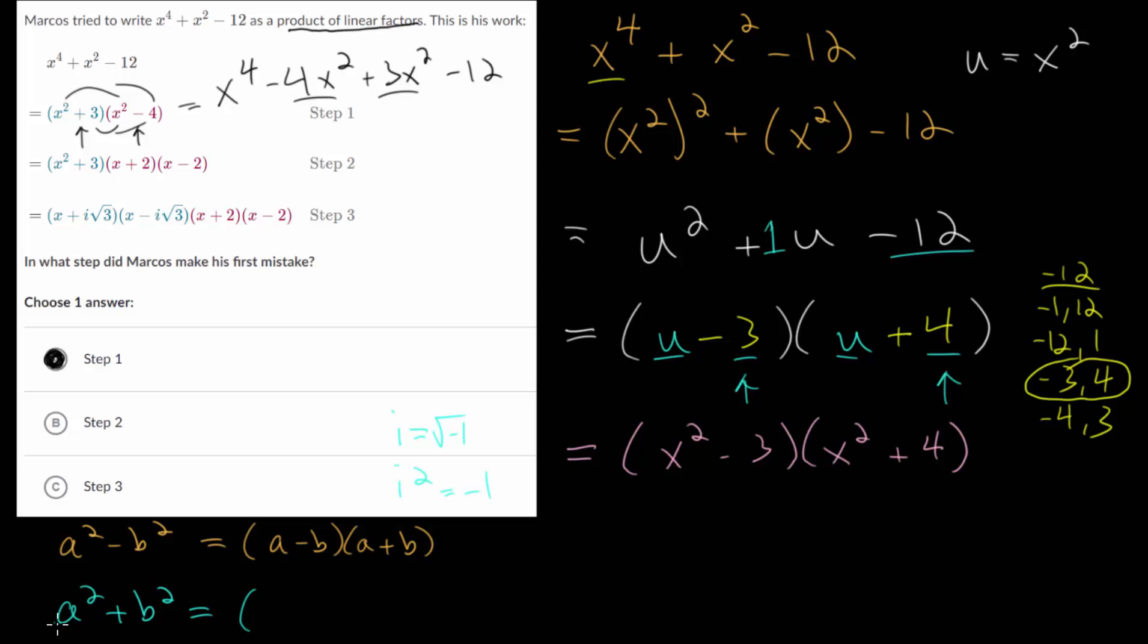The result that we get is the first one minus i times the second one, now ignoring the squares, and the first one plus i times the second one, again ignoring those squares. So let's apply both of these formulas and we can further factor these.